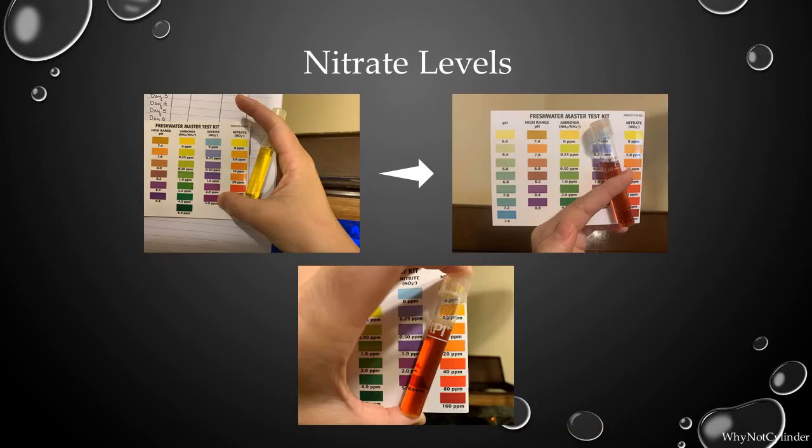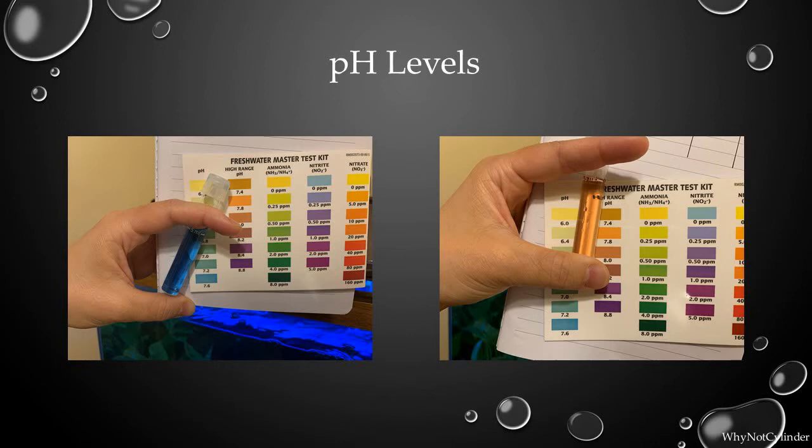And for your nitrate levels, you will start at yellow which is zero and gradually increase in concentration. And the only time your concentration of nitrate will decrease is when you do a water change. And the last thing that I'm testing is my pH level. So my water has a pH of 7.6 as indicated by the regular pH indicator and the high pH indicator.